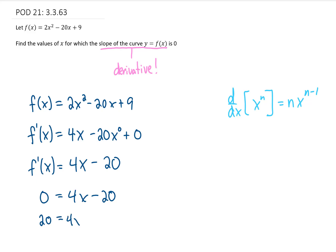I'll add 20 to both sides. I'll divide both sides by 4 to get x equals 5 as our final answer.